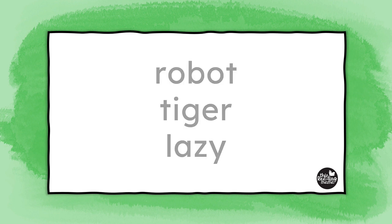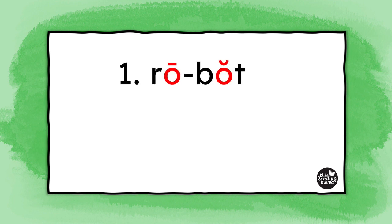But how do you teach kids to look for open syllables in longer words? In my years of teaching struggling readers, I found it easiest to begin teaching open syllables by using words that have an open syllable in the first syllable and a closed second syllable, like RO-BOT. Because learners already know how to read closed syllable words, it's a good place to start.